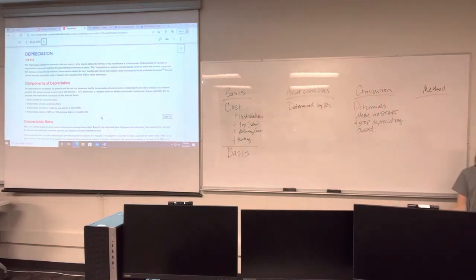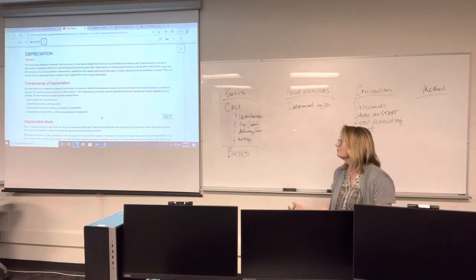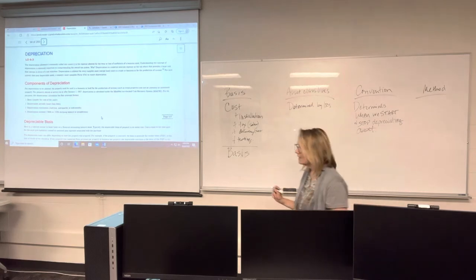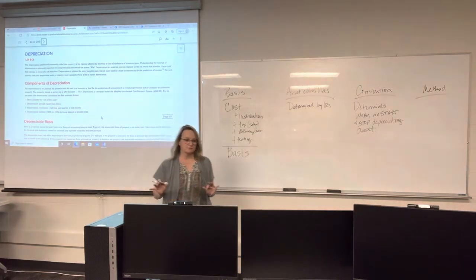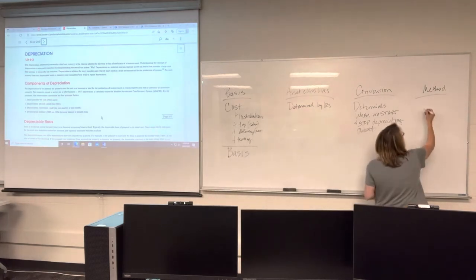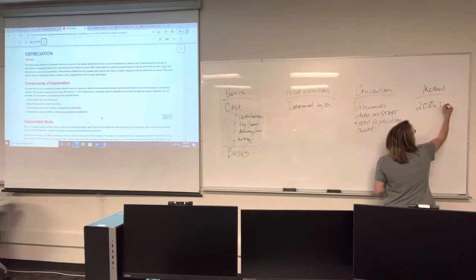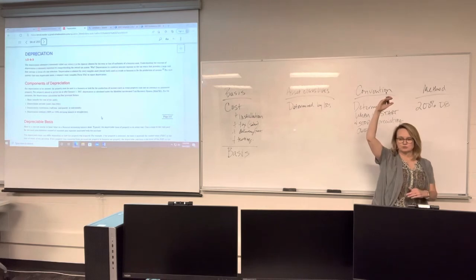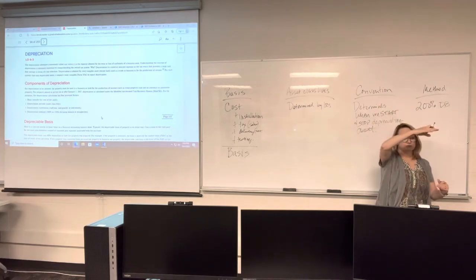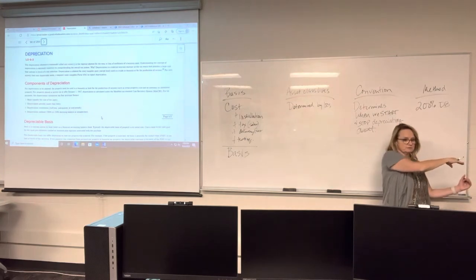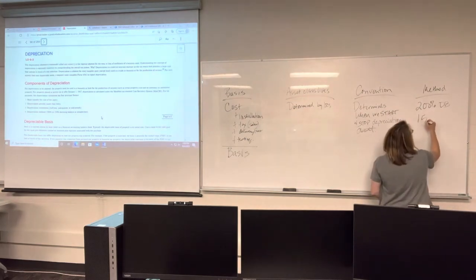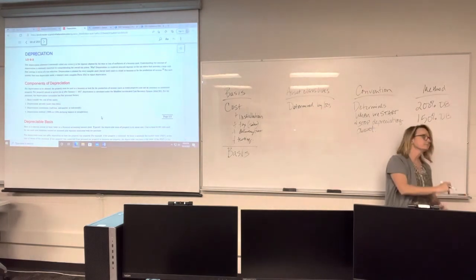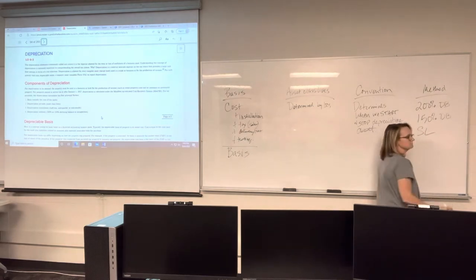We have three methods of depreciation we can use: 200% declining balance, which means we start with a larger chunk of depreciation that reduces every year until we get down to zero; 150% declining balance, which is the same concept but not reducing as quickly; or straight-line, which we all know. There is no triple declining balance and no sum of the year's digits in tax depreciation.